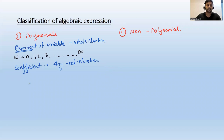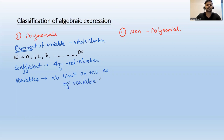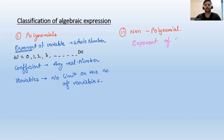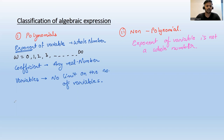The third condition is regarding the number of variables — there is no limit on the number of variables. If these conditions are not satisfied, the expression is a non-polynomial. The major distinction comes from the exponent: if the exponent of a variable is not a whole number, that expression will not be a polynomial — it is a non-polynomial.